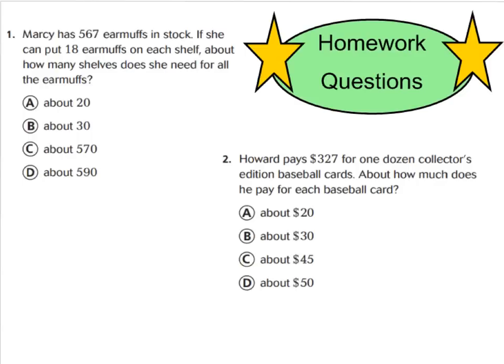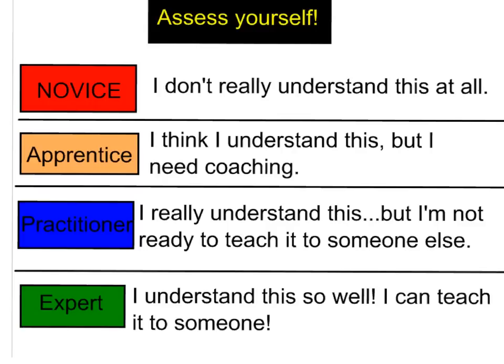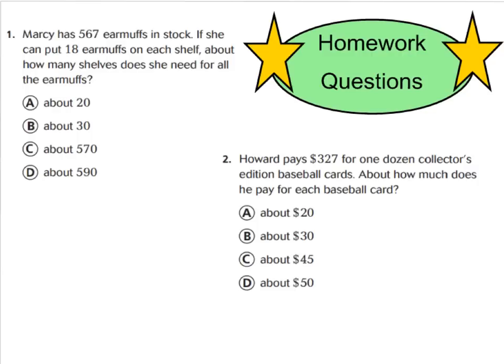Now your two homework questions for tonight are questions one and two. I want you to go ahead and work these out and do your best. And if you still don't feel like you are confident, don't worry, we will be practicing more tomorrow. But go ahead and choose A, B, C, or D for either one or two. And I want you to rate yourself either as novice, apprentice, practitioner, or expert, based on estimating with compatible numbers. When you're finished with questions one and two, don't forget to do three through six for extra practice. And we'll check all six of those tomorrow in class.